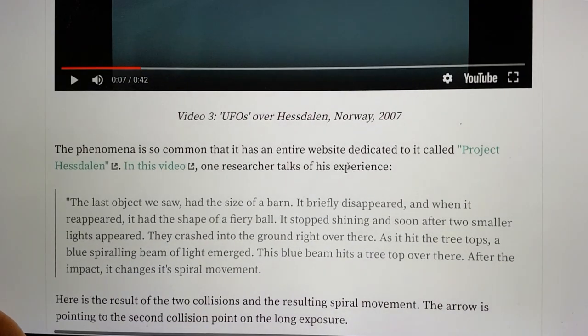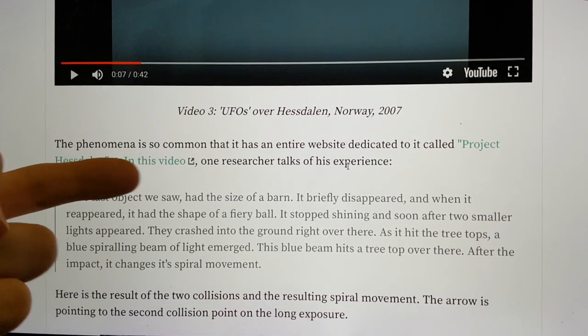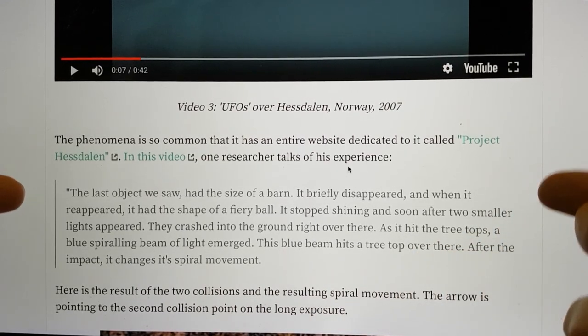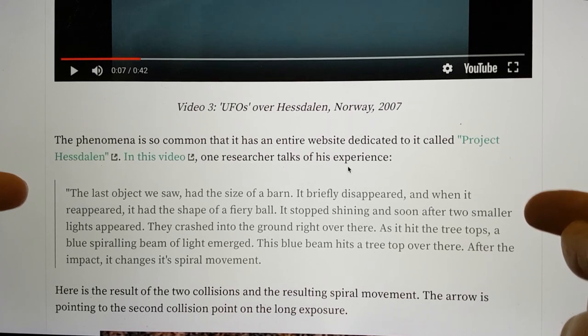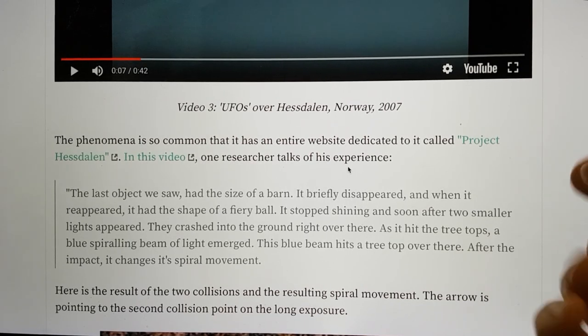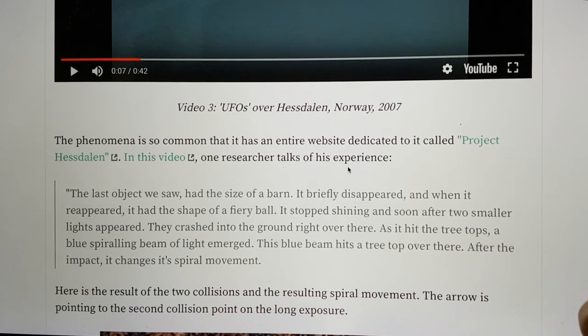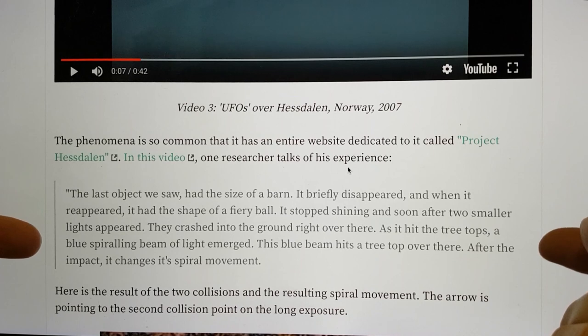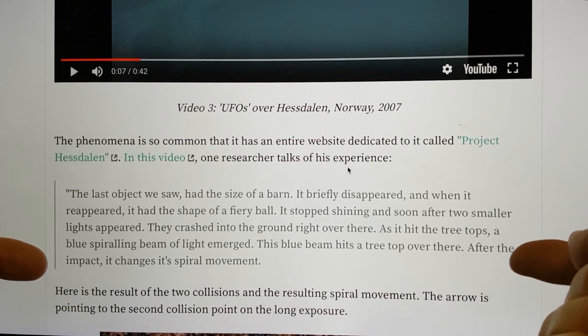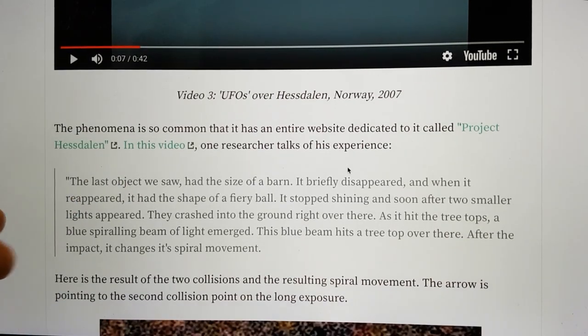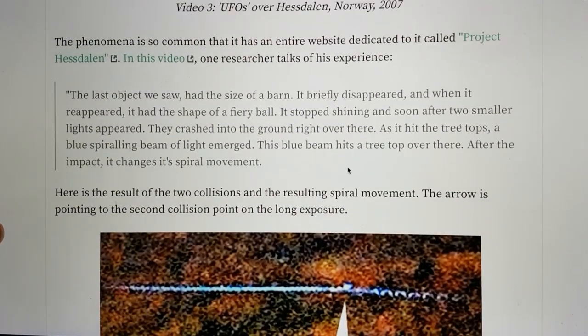Essentially, this is another video which you can link to here on YouTube. There's someone narrating one of their observations. It says, the last object we saw had the size of a barn. It briefly disappeared, and when it reappeared, it had the shape of a fiery ball. It stopped shining, and soon after, two smaller lights appeared. They crashed into the ground right over there. As it hit the treetops, presumably on the way down, a blue spiraling beam of light emerged. This blue beam hit the treetop over there. After the impact, it changes its spiral movement.